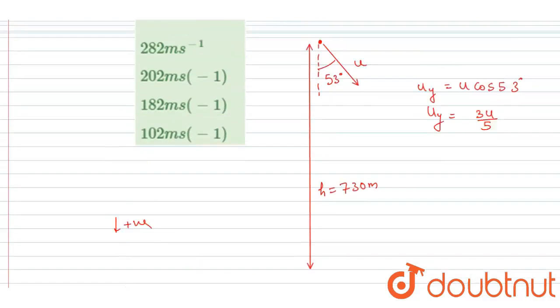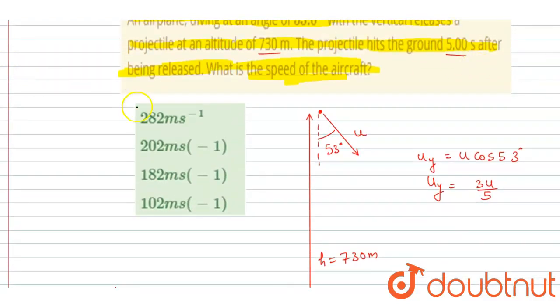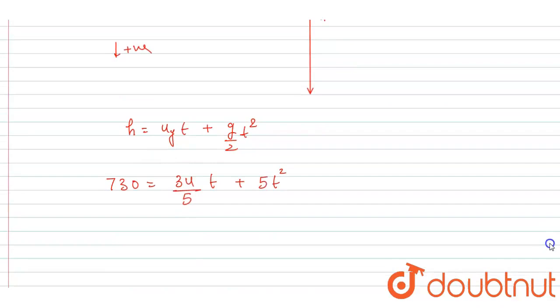Now the time after which it strikes the ground is 5 seconds. Put the value of time also, it is 5 seconds. So I will write it is 5, so it will be 3u. Now 5 into 5 into 5, it will be this.